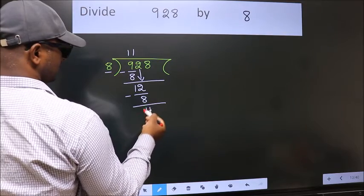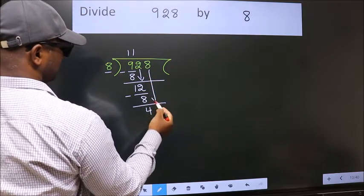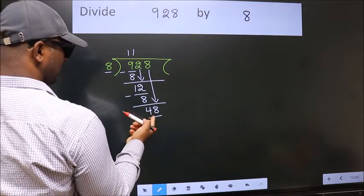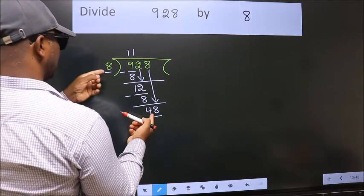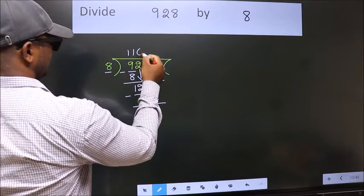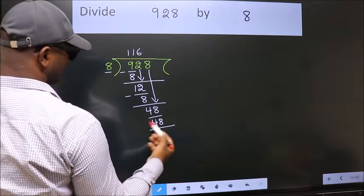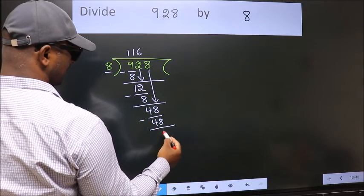After this, bring down the beside number. So 8 down. So 48. When do we get 48 in 8 table? 8 times 6 is 48. Now we subtract. We get 0.